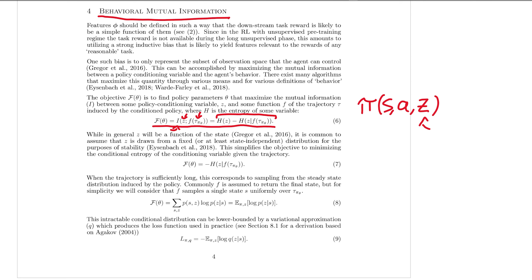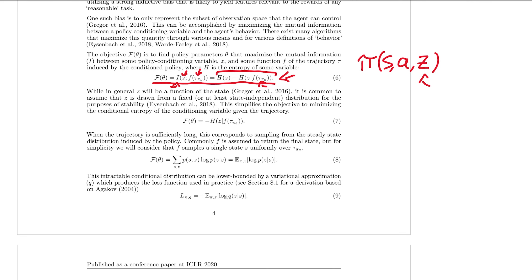What they do is derive a loss function from this. Q here is a discriminator that wants to predict whether z was the skill that was actually used to produce state s. This loss function will be used to learn our feature representations. So just to review: we have z, which is a policy conditioning variable where different values represent different skills. We're trying to maximize the mutual information between this skill and the trajectories it produces, so that it produces very different behaviors for different skills. We derive a loss function that achieves this by changing the representation — hence learning a representation that gives us policies with very different skills.